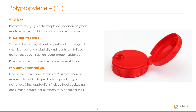Polypropylene, or PP. Polypropylene is a thermoplastic addition polymer made from a combination of propylene monomers. Some of the most significant properties of polypropylene are good chemical resistance, elasticity and toughness, fatigue resistance, good insulation and good impact resistance. Polypropylene is one of the most widely used plastics in the world today. One of the main characteristics is that it can be molded into a living hinge due to its good fatigue resistance.